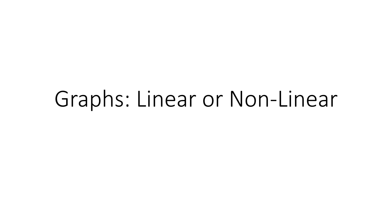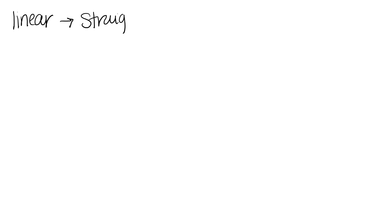This video is about determining if a graph is linear or nonlinear. Just as a reminder, the word linear is representative of a straight line. And when it's a straight line, it has to be a perfectly straight line — no curves, no stops, no starts. It's just one continuous straight line.